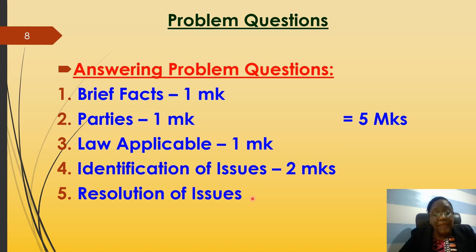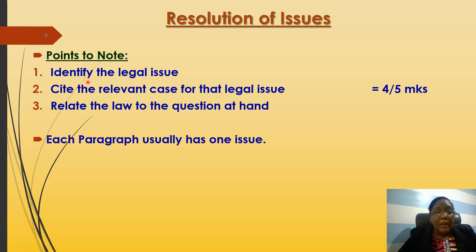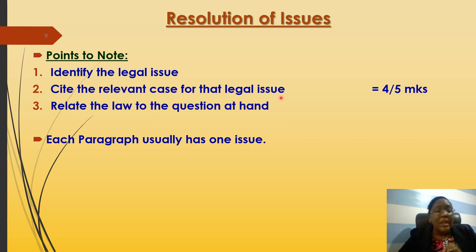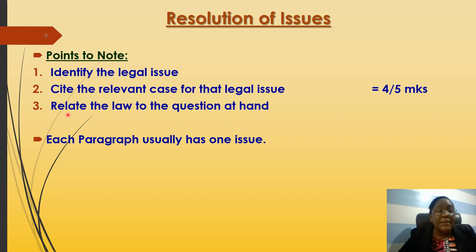Next comes the resolution of issues — this is where your full answer comes in, covering the remaining 20 marks. For each issue, identify the legal issue — for example, capacity to contract. Then cite the relevant case: if the issue is that children cannot contract, cite Nash v Inman, showing you understand that case establishes children lack capacity to contract. Then apply it to the question: the child Brian was too young to form a contract, therefore no contract was created. That can earn you up to five marks.